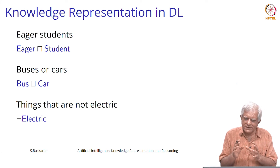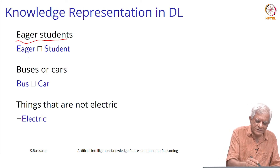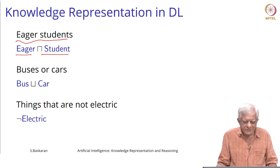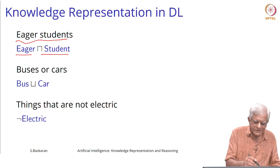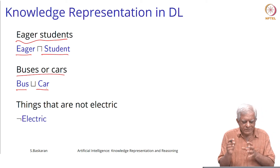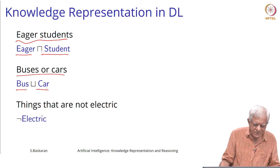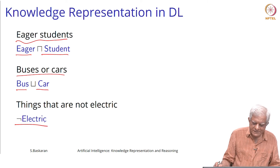When we are talking about concepts, we can say for example that 'eager students' is the intersection of those who are eager and those who are students. Similarly, 'buses or cars' is a union — if you have the concept of bus and the concept of car, we can define a concept of 'buses or cars'. And if you have things which are electric, we can say 'not electric' essentially.